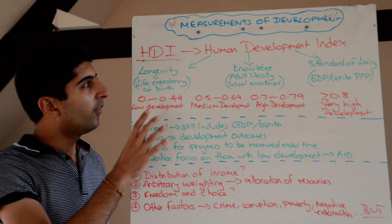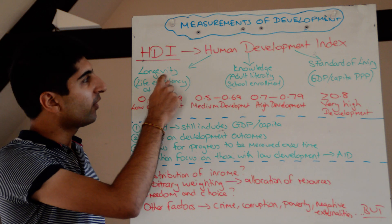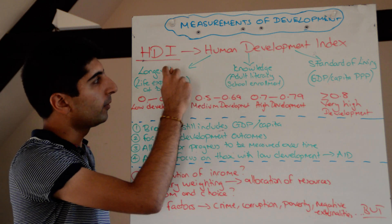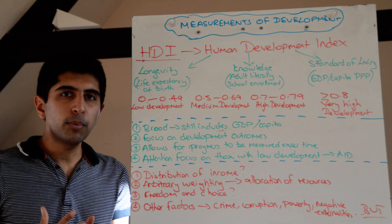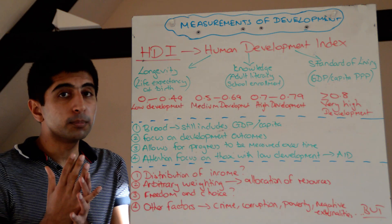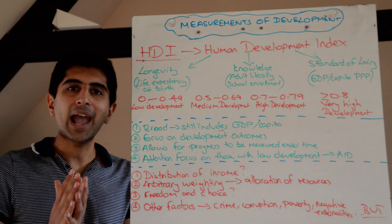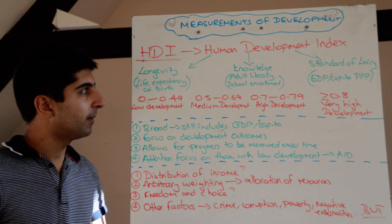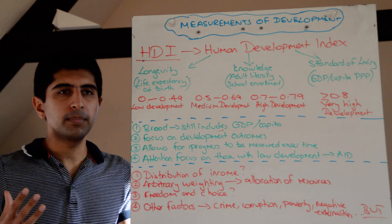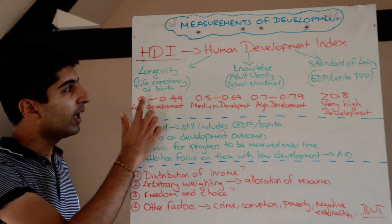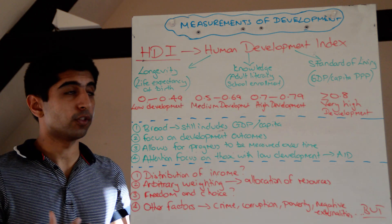So what's actually measured? Well, longevity. The key thing to realise is that the words at the top — longevity, knowledge, standards of living — are important to know, but what's more important is understanding how they are measured. Longevity, very simply, think of it as life expectancy at birth.